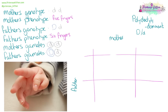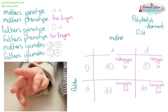Polydactyly is a condition where people have six fingers, and it is dominant. A mother with two recessive alleles has five fingers; a father with one dominant and one recessive allele has six fingers. Filling in the genetic cross, we can see that if a parent has this dominant characteristic and one copy of the gene, any offspring has a 50% chance of also having polydactyly.